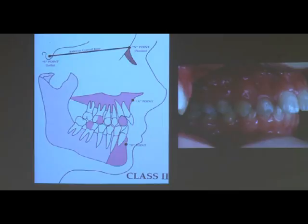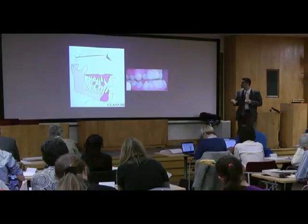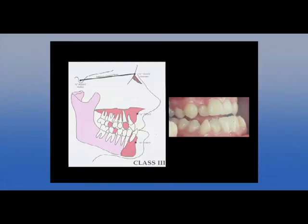Skeletal 2B treatment is promoting the mandible to come forward. The last skeletal class is class 3. And again you can have three types of class 3: skeletal 3A, skeletal 3B, skeletal 3C.